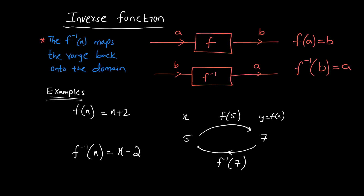Inverse functions are the functions that map the range back onto the domain. For example, if you have a function taking a value a as input and giving you output b, the inverse function takes that same output b and gives you the input a back. Such kinds of functions are known as inverse functions — they map the range back onto the domain.